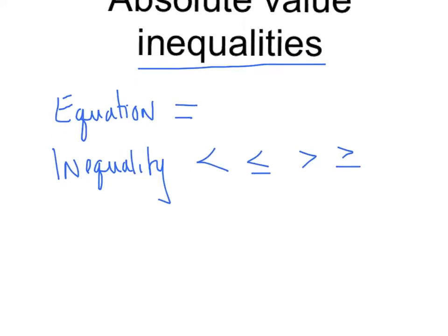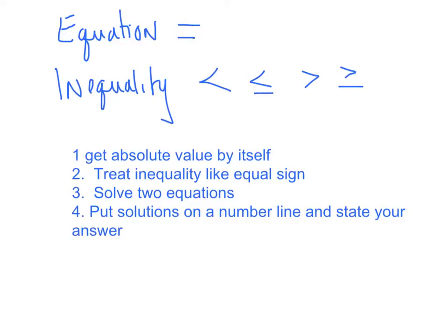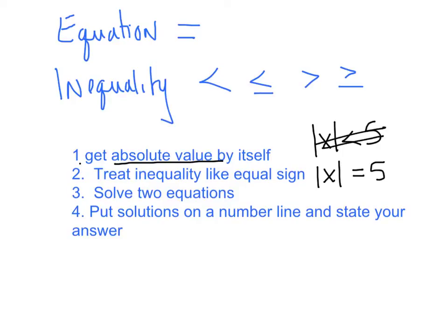Solving them isn't very different. So here are the steps we want to write down. Step number one: get the absolute value by itself, exactly what we did yesterday. Step two: treat the inequality like an equal sign. So if it says the absolute value of x is less than five, you are writing the absolute value of x equals five — forget that symbol and treat it like an equal sign.